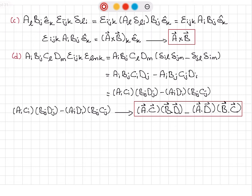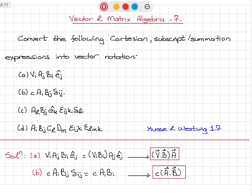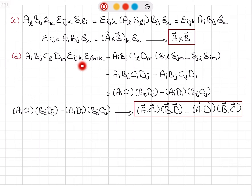So we have converted the subscript summation expressions to vector notation. Part A: V_i A_j B_i Ê_j — grouping same-index terms, V_i B_i is V·B and A_j Ê_j is vector A, giving (V·B)A. Part B: C A_i B_j δ_ij — the Kronecker delta gives A_i B_i = A·B, so the answer is C(A·B). Part C: A_l B_j Ê_k ε_ijk δ_li — the delta replaces l with i, giving ε_ijk A_i B_j Ê_k, which is the k-th component of A×B times Ê_k, yielding A×B.